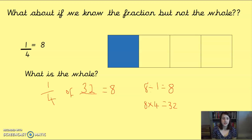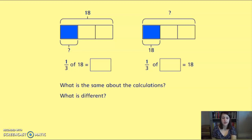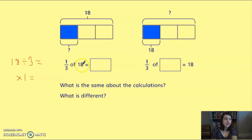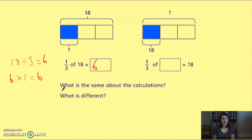Let's have a go at this. First, one third of 18 — pause the video and try that. That's the straightforward method. We divide the whole number by the denominator: 18 divided by three is six. Then six times the numerator — six times one — is six. So one third of 18 is six.